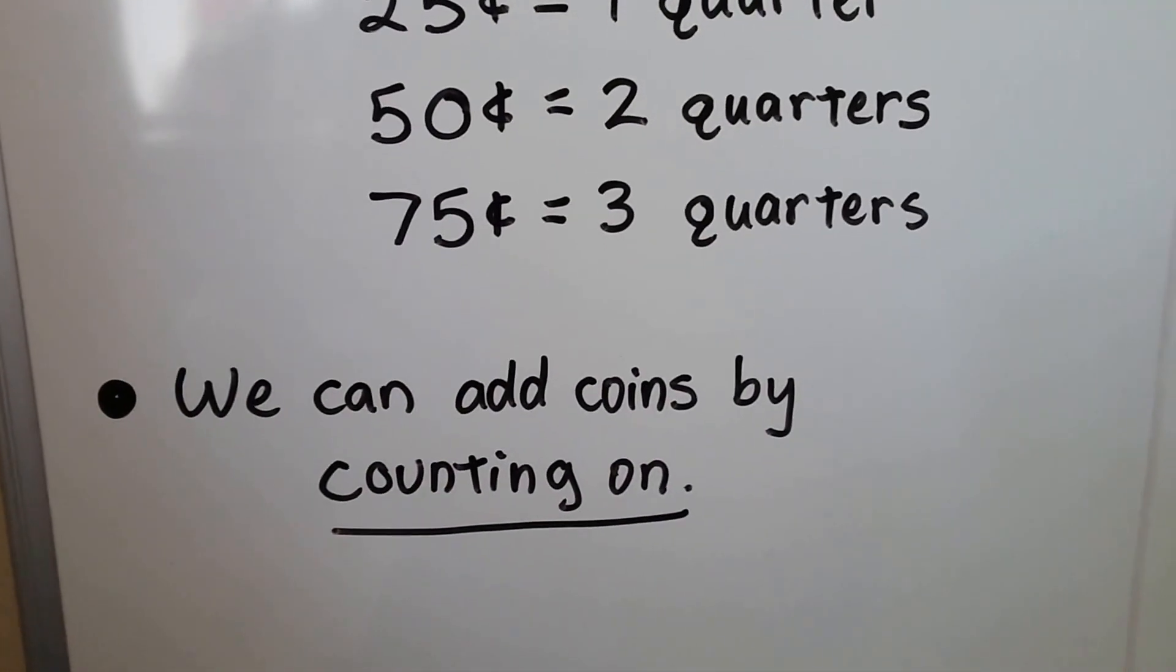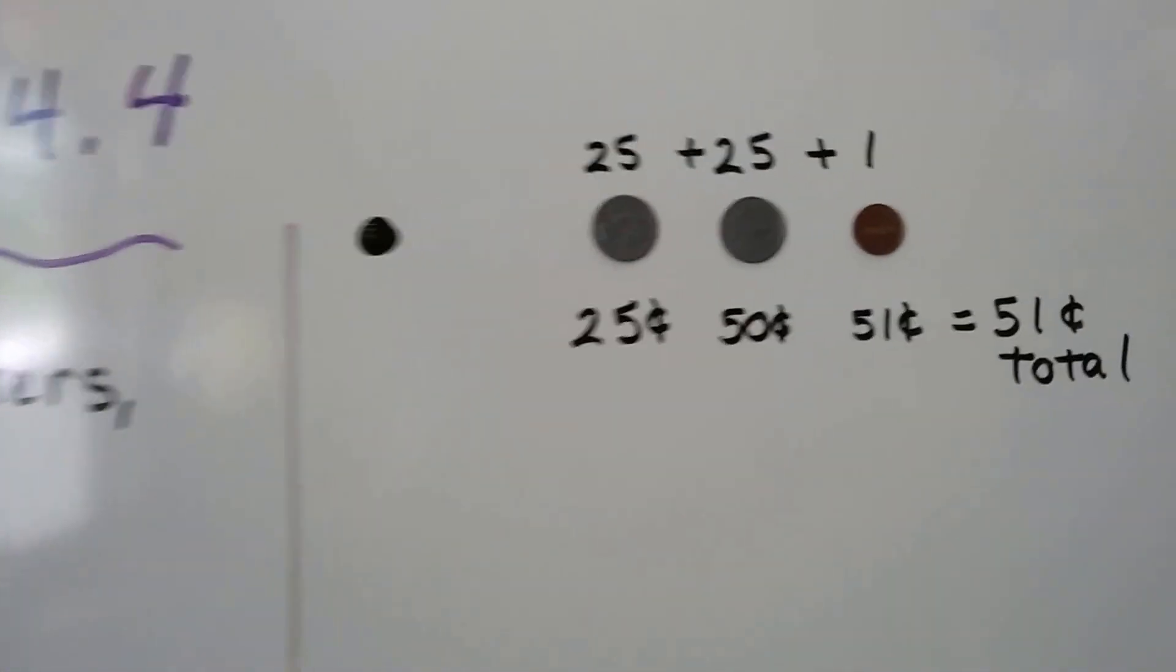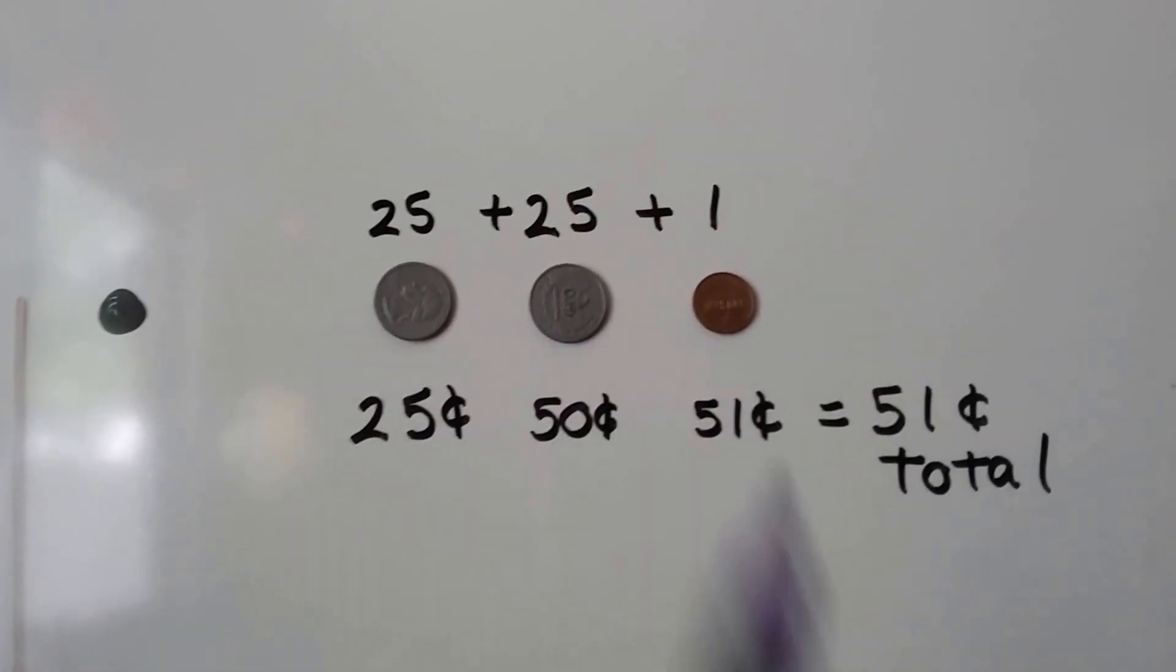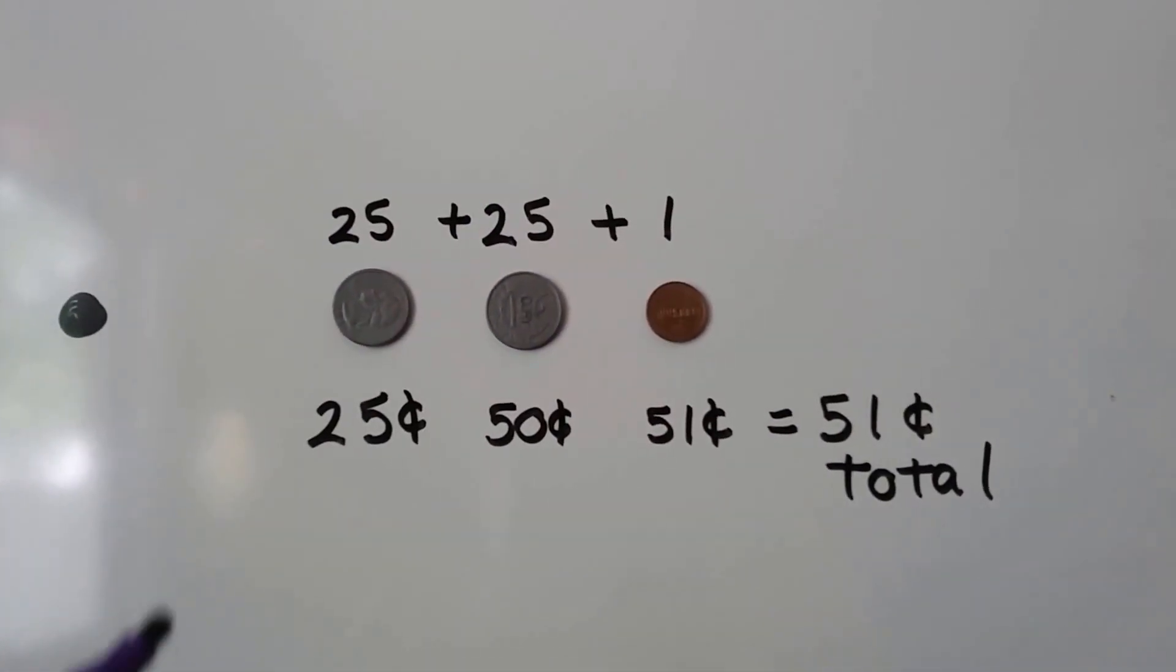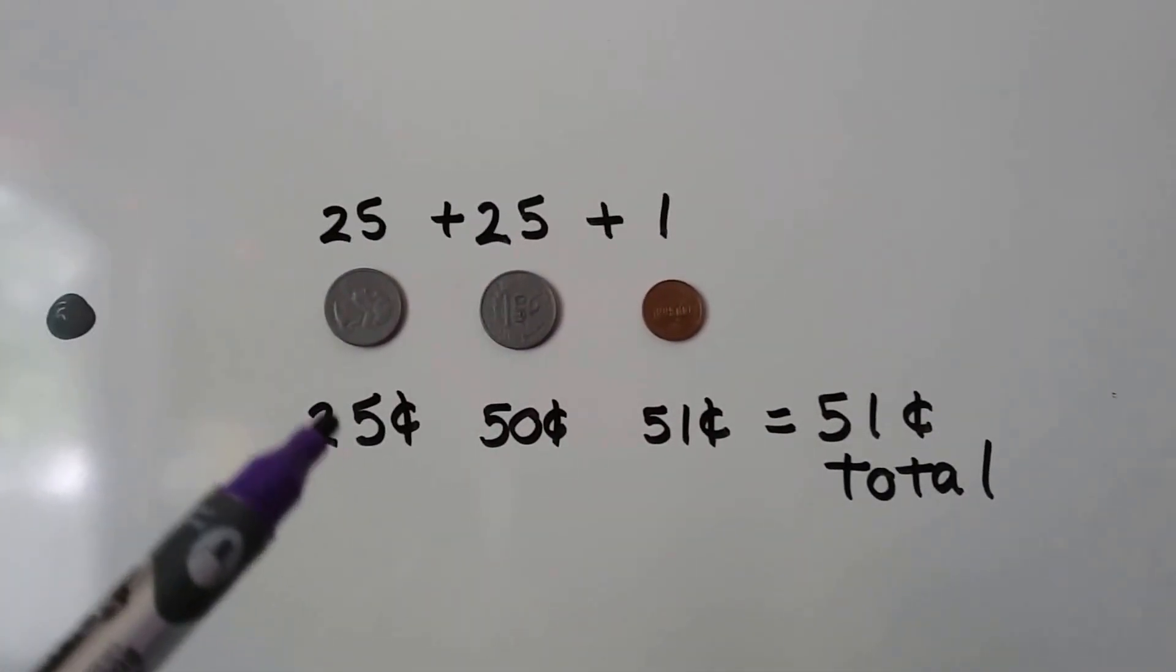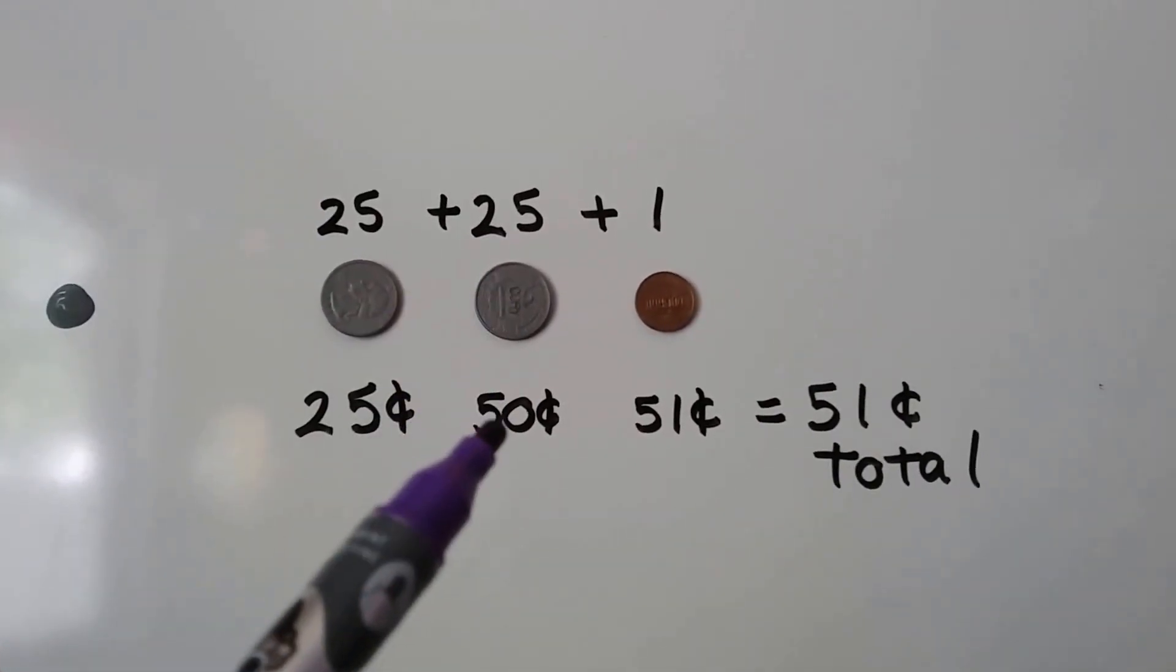And we can add coins by counting on. Here we've got 2 quarters and a penny. That's 25 and 25 and a 1. We can count by counting on. We start with the largest number, 25.